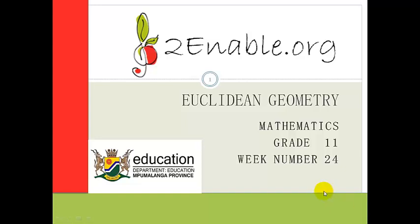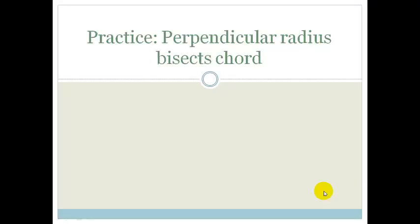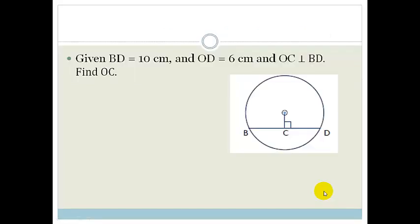Good day Grade 11. Welcome to your first lesson on Week 24. We are carrying on with Euclidean Geometry, and in this lesson what we are going to do is practice the theorems that we learnt last week. We are going to put into practice the fact that the perpendicular radius bisects a chord. So let's do our first example.